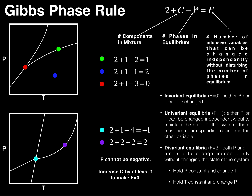Then we have minus P. P is the number of phases in equilibrium, and we have to be looking at a specific point on the phase diagram. For example, if we look at this green point, it's right on a boundary between two phases, so it has two phases in equilibrium. This red point is actually at the junction of three phases, so P would be three. If a dot is right in the middle of one of the phase areas, it's just isolated — one phase — so we'd use a P of one.